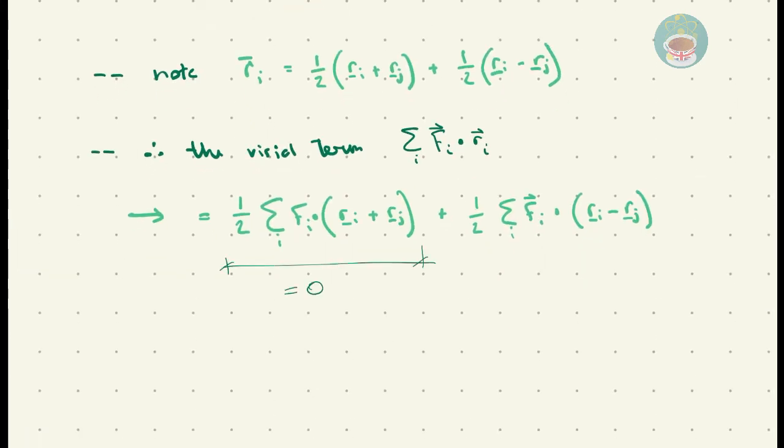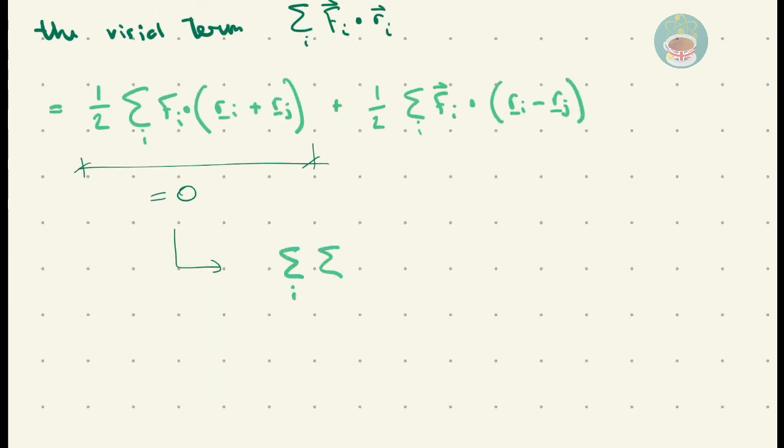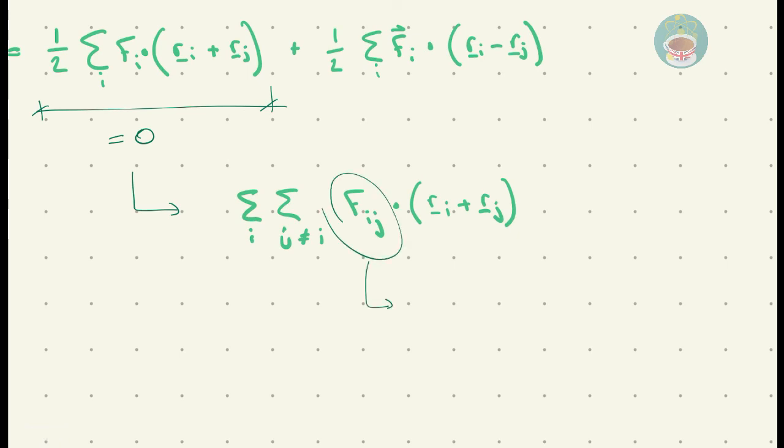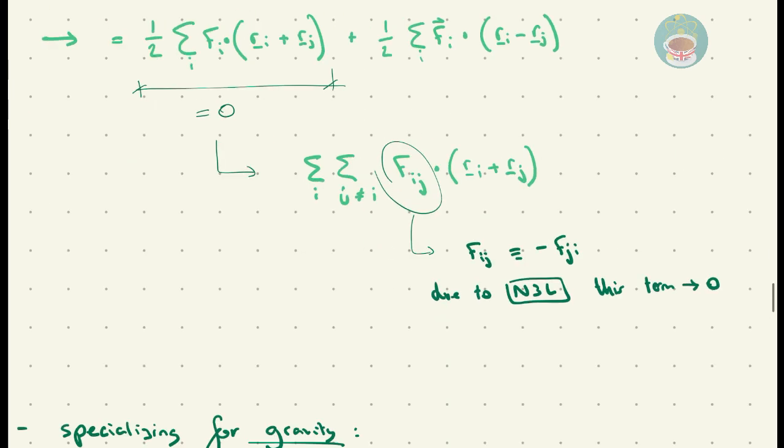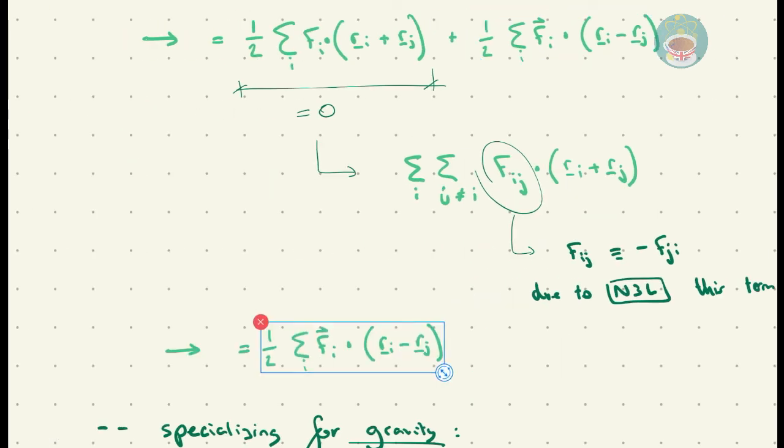This term actually equals 0 for the following reasons. We can rewrite the sum over i Fi dot magnitude of distance as the sum over i and j is not equal to i forces i on j dot distance. However, because this is, by Newton's third law, equal and opposite to the force experienced by particle j on i, this term can cancel to 0, leaving just the second term.